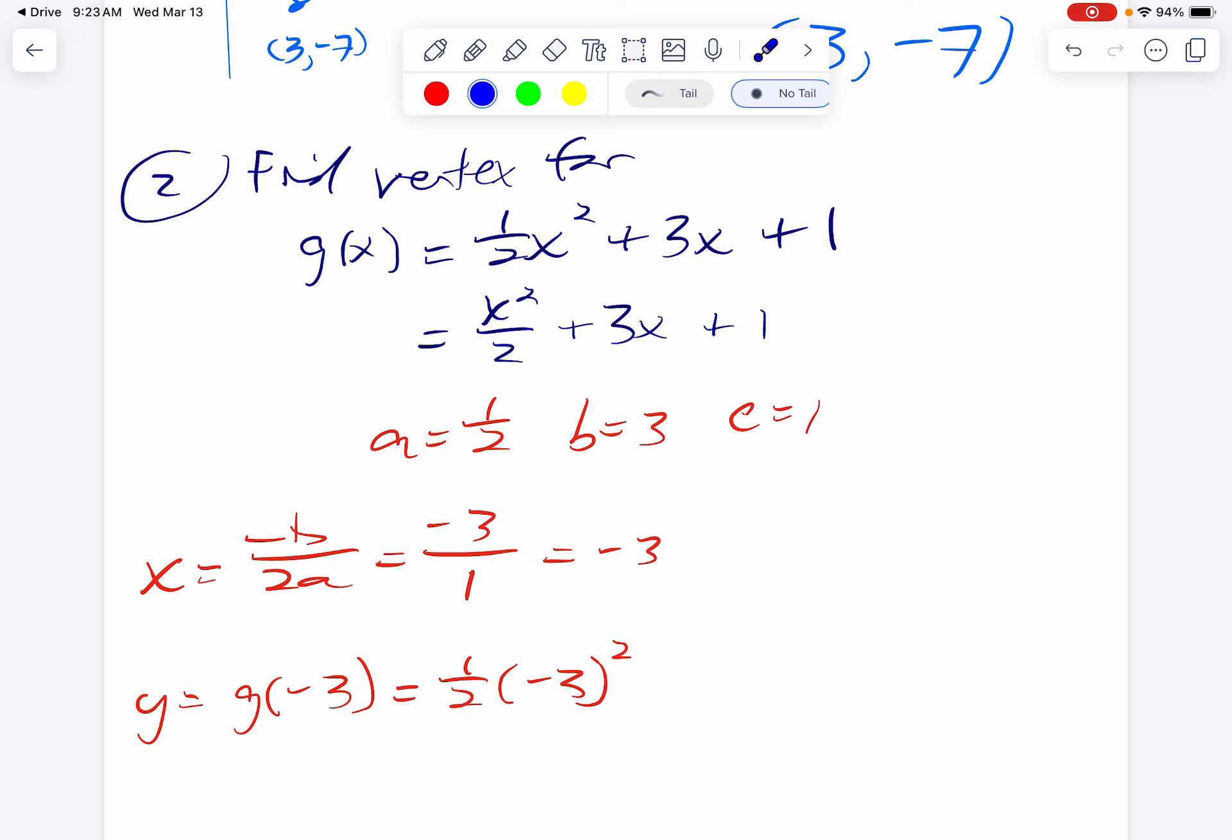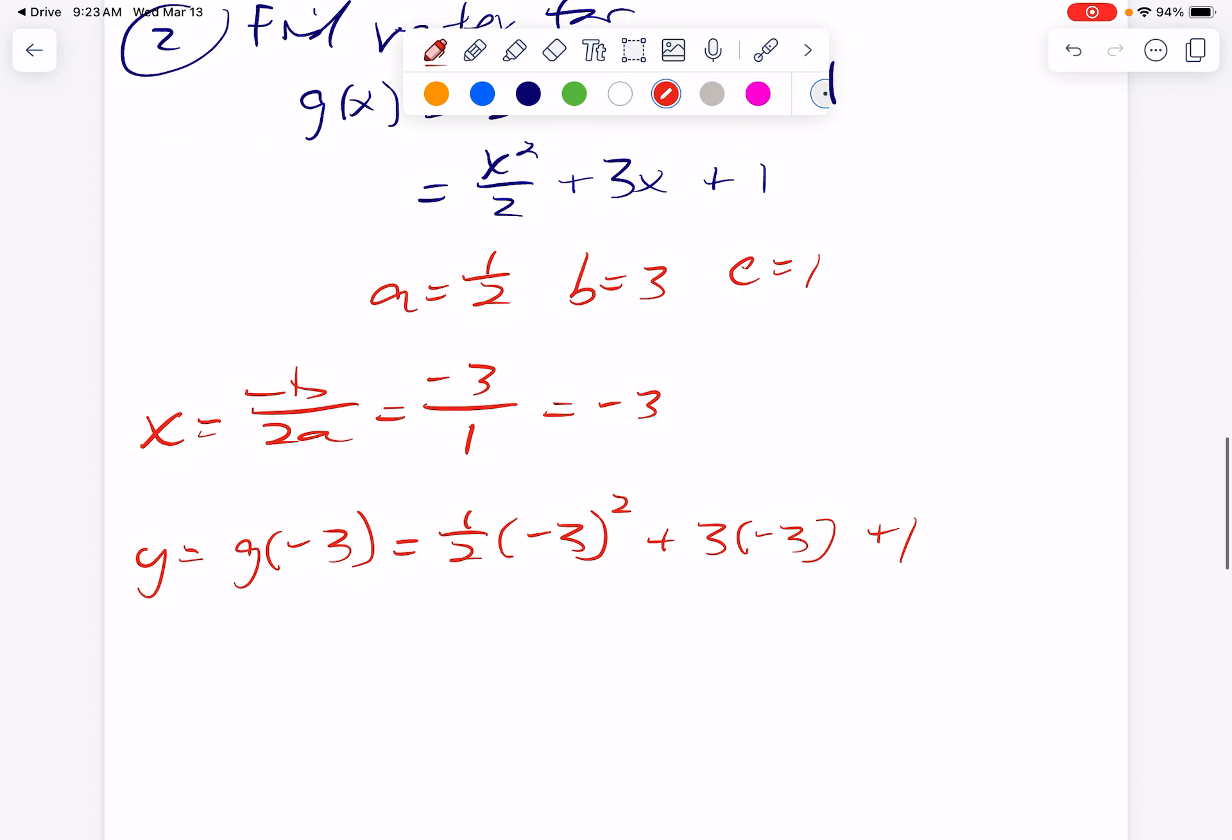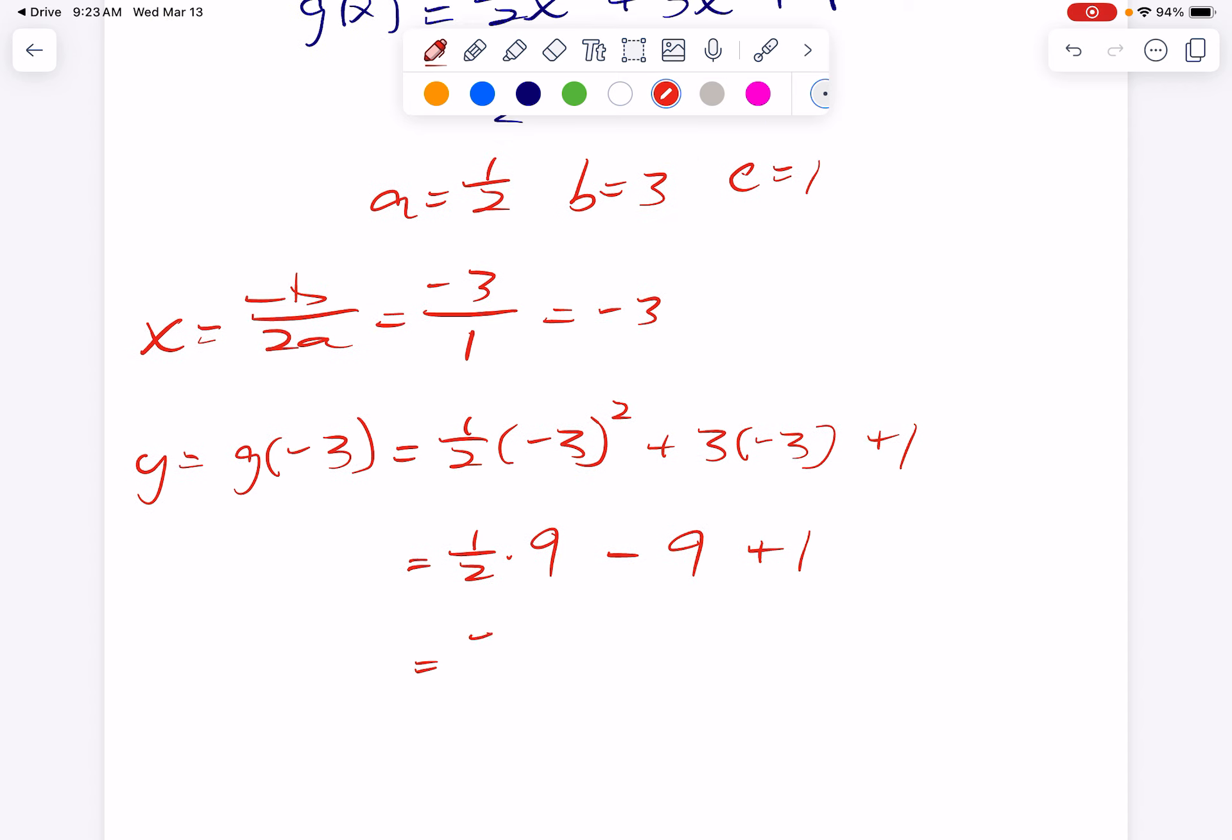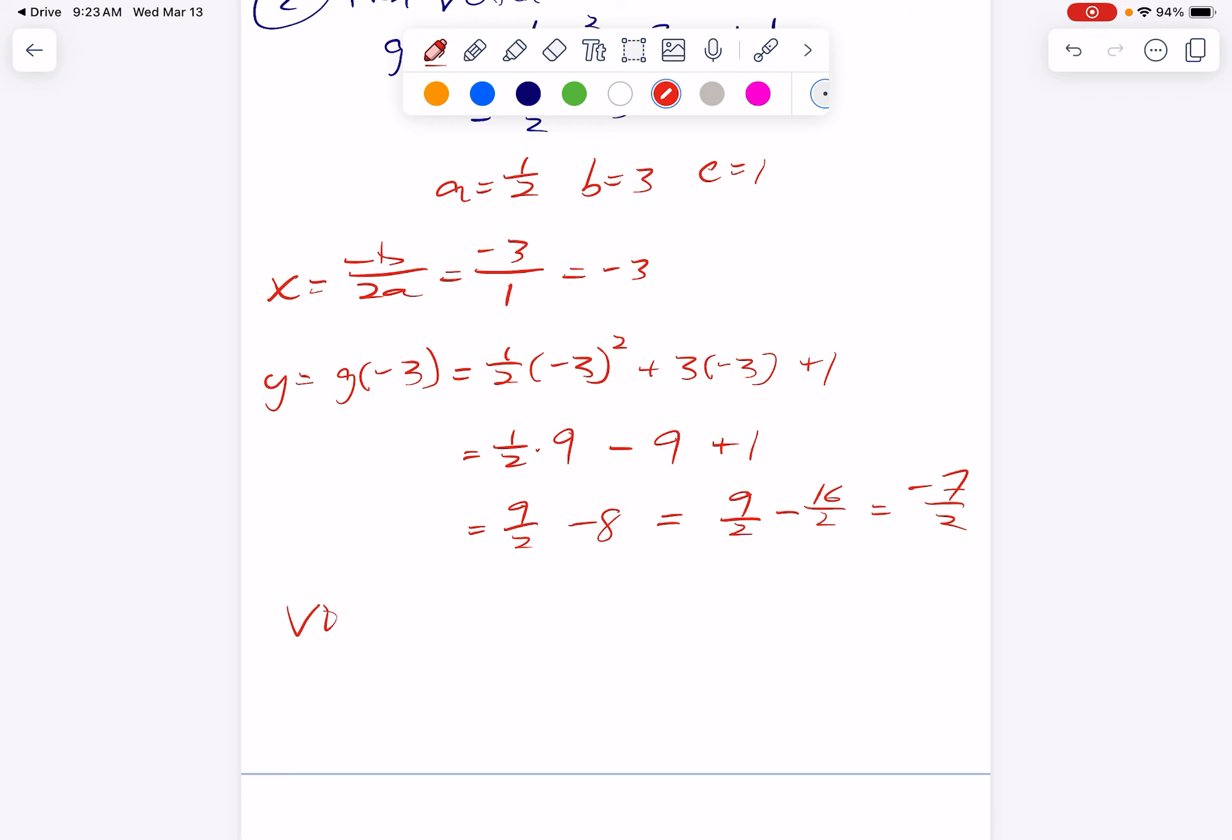Plus 3 times negative 3 plus 1. So this is 1 half times 9 minus 9 plus 1. So this is 9 halves minus 8. Let's make a common denominator. 9 halves minus 16 halves, which is negative 7 halves.